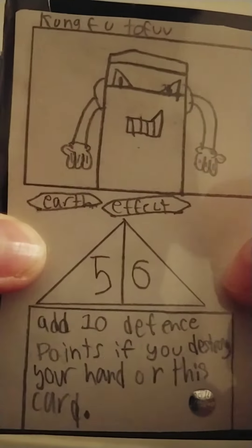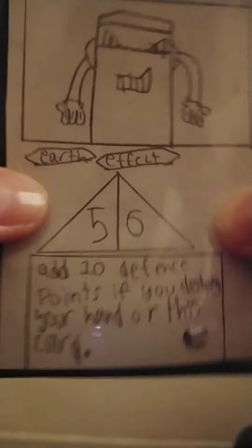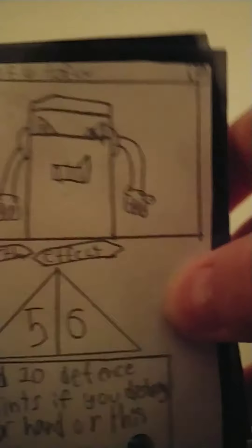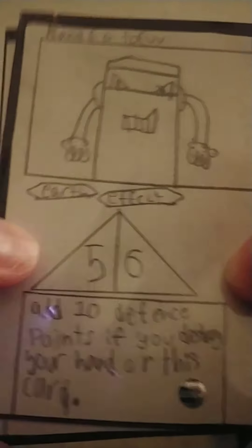Next card we have - it's a really good card, it is Earth and it's a level of seven. It has five attack points and six defense points.